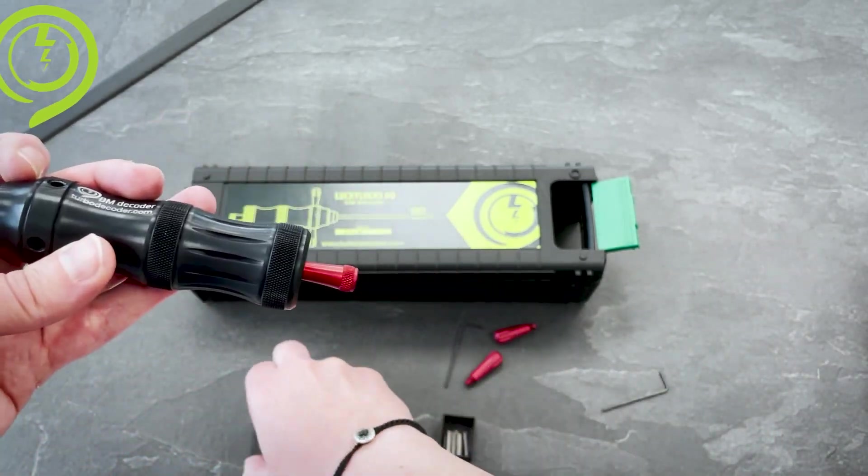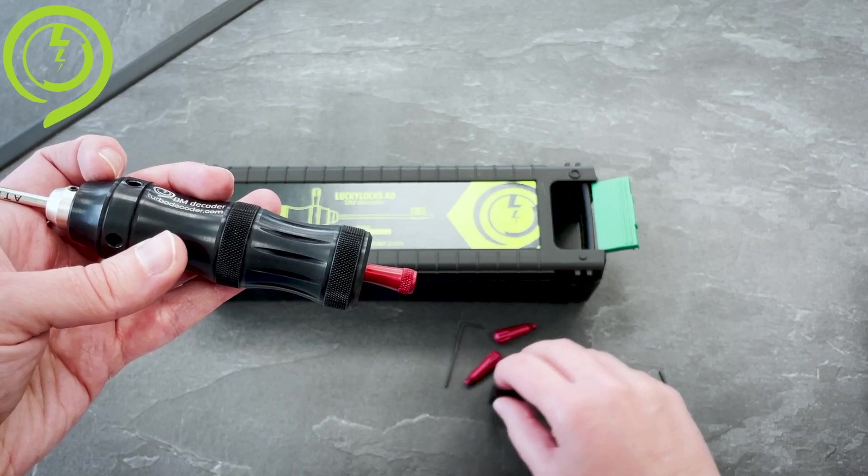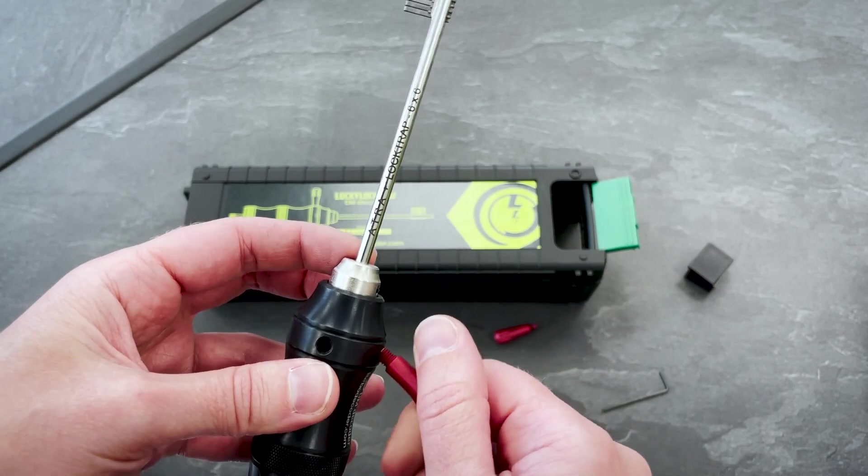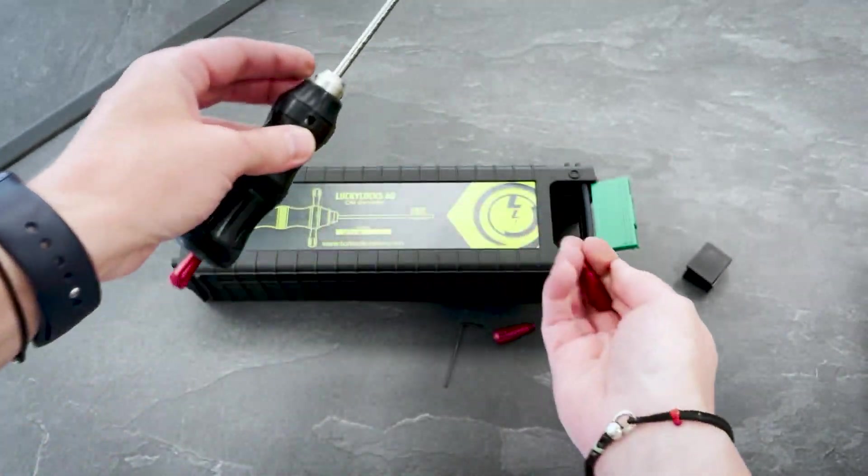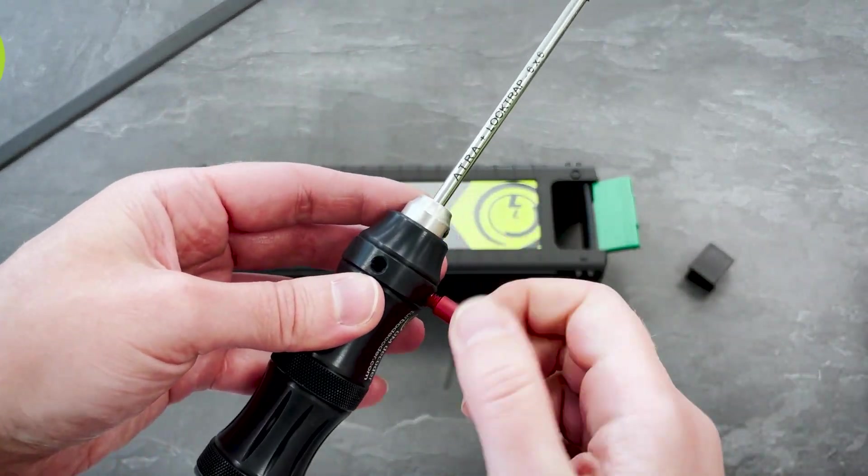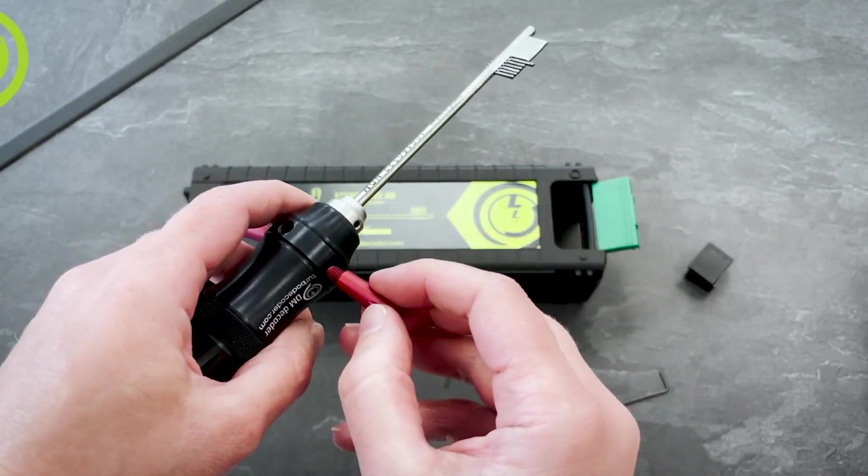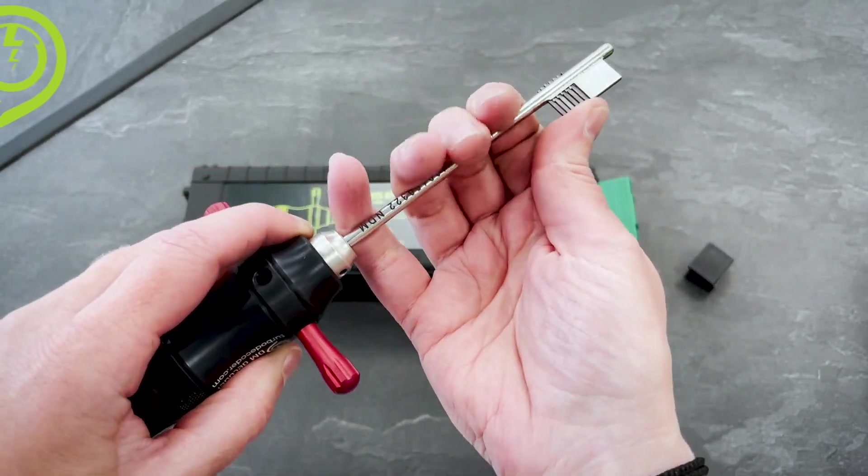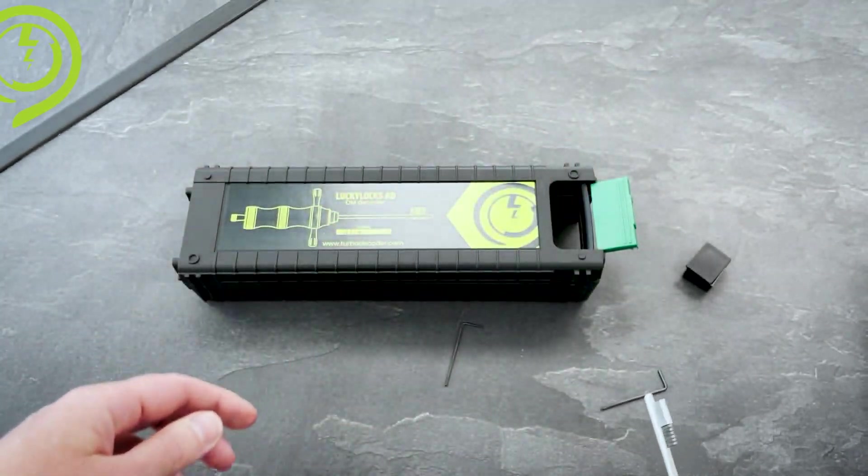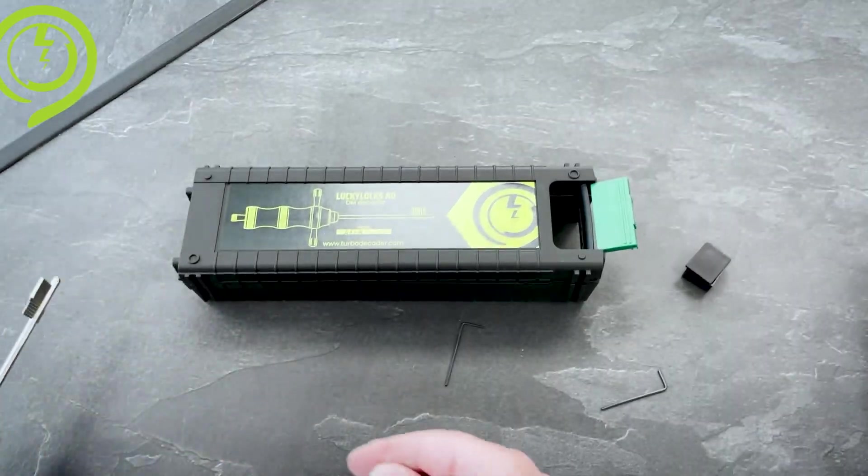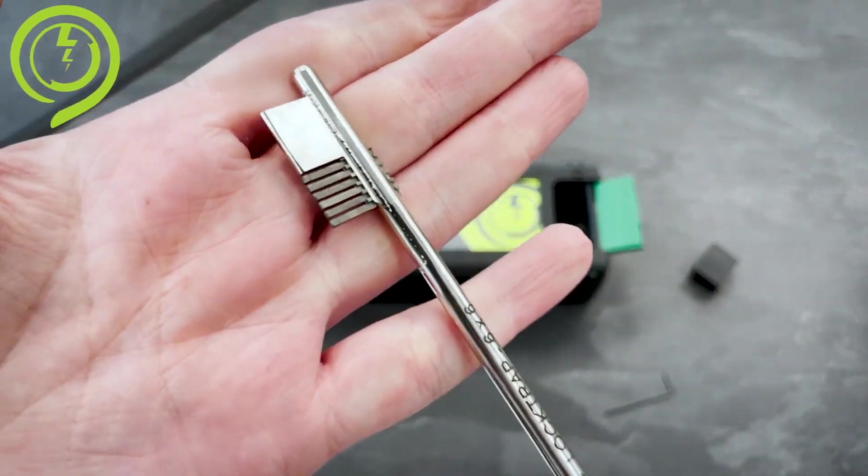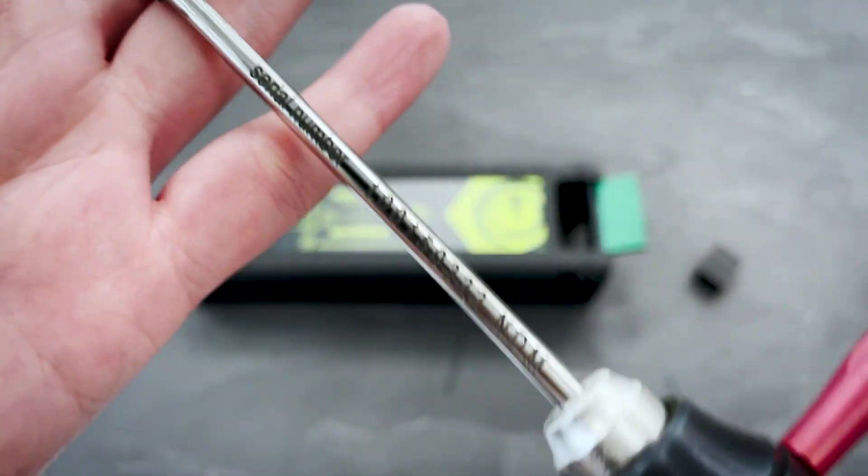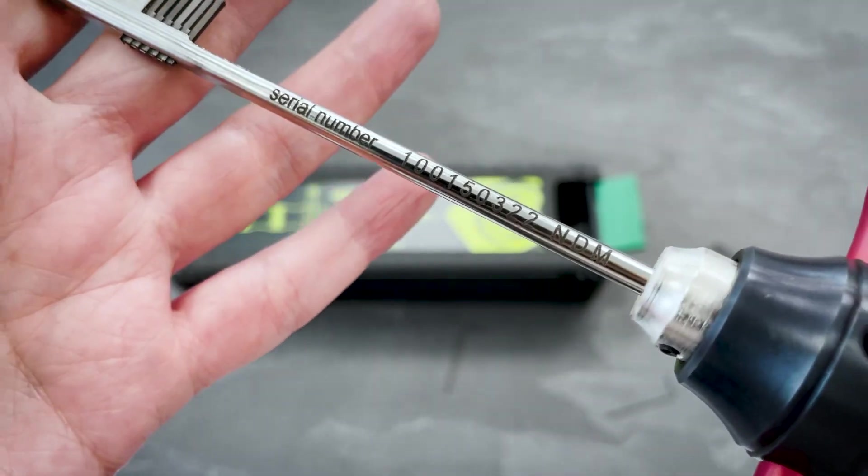The external manipulator, those hopefully you won't need very often. And the tool is fully assembled. On a flat surface you reset the pins and the tool is ready for operation. Every stick comes with a unique serial number.